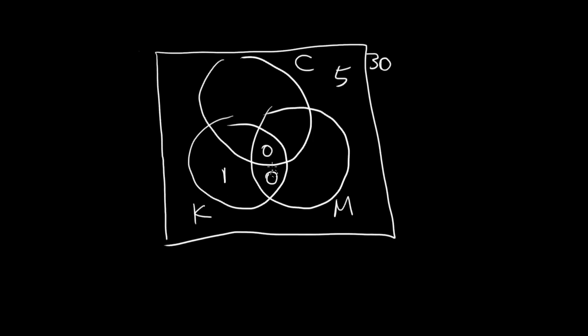So now one more thing we know is that there are 8 that like Keystone, and 1 is here, so that means 7 have to be right here. And now we're left with these 3 areas, and the question is asking for how many like Captain and exactly one of the 2 beers. So this is like Captain and Keystone, this is like Captain and Miller, so we also need this area.